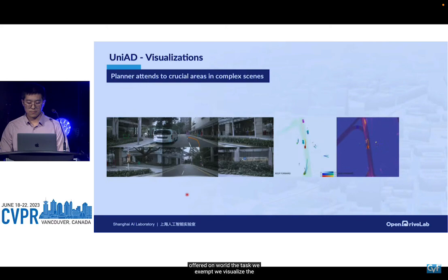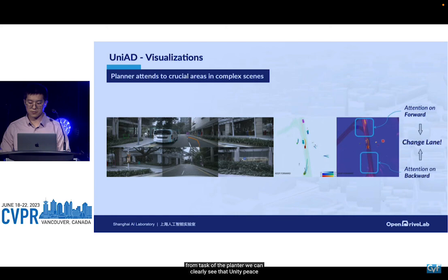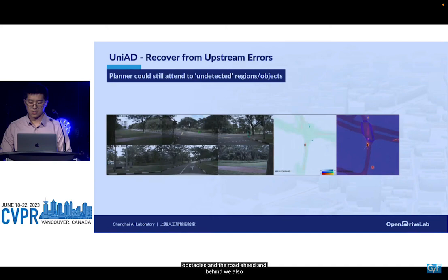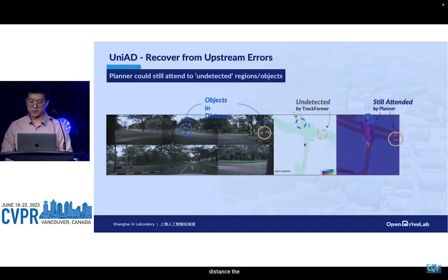We visualized the intermediate representations to exhibit the interpretability of UniAD. In this scenario, the ego vehicle is carefully changing lanes to avoid an obstacle vehicle. From the attention mask of the planner, we can clearly see that UniAD pays strong attention to both the obstacles and the road ahead and behind. We also found its potential to recover from upstream errors — even when the preceding perception module fails to detect two cars in the distance, the planner still shows strong attention and awareness towards those areas.